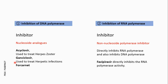For RNA viruses, there are non-nucleoside polymerase inhibitors which directly inhibit RNA polymerase activity. For example, favipiravir is a drug that inhibits RNA polymerase. This group of inhibitors can not only inhibit RNA polymerase activity but are also able to inhibit DNA polymerase.